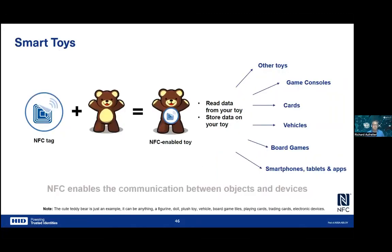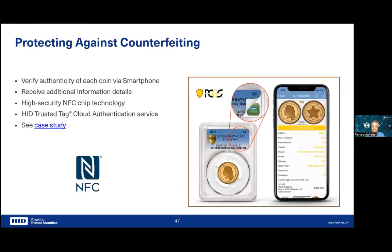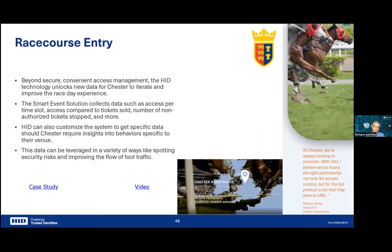Smart toys use embedded tags to make each toy uniquely identifiable by a game board or console, bringing up the proper context, song, or character. Anti-counterfeiting: a coin grading company seals collectible coins or baseball cards in tamper-evident housings with embedded trusted NFC tags, allowing authentication via NFC tap. Race course entry uses RFID and mobile ticketing just as described in the events and public transport section.